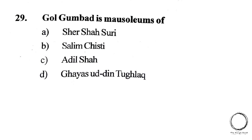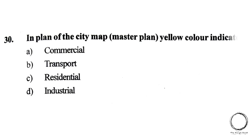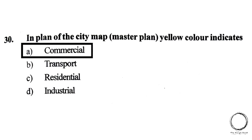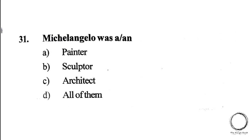Next question: In a city map master plan, the yellow color indicates — A) Commercial, B) Transport, C) Residential, D) Industrial. The answer is A) Commercial. Next question: Michelangelo was a — A) Painter, B) Sculptor, C) Architect, D) All of them. The answer is D) All of them.